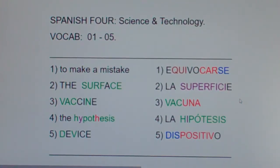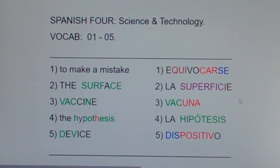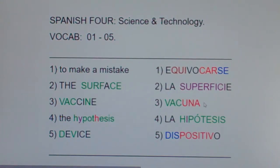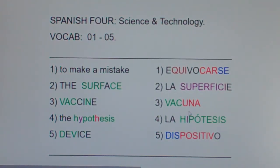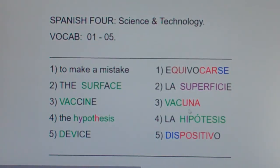Vaccine is 'vacuna.' Like you get a vaccine so you don't get malaria, or you get a vaccine so you don't get smallpox. It has four of the same letters in both languages: V-A-C-N. And see the word 'una'? It means 'a' or 'one.' I need a vaccine against malaria, or I need one more vaccine. Vaccine — vacuna.